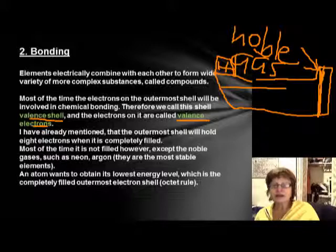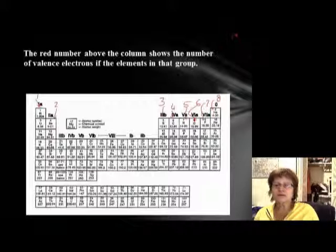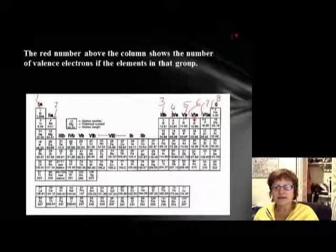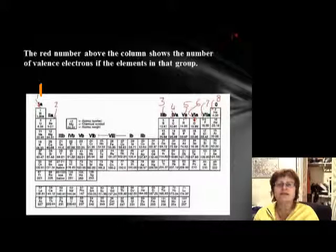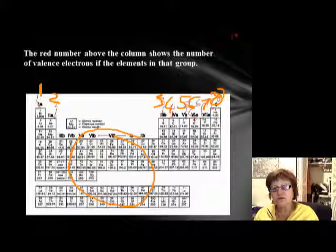Every other element besides the noble gases wants to react so they can have eight electrons and reach their lowest energy level — remember, the octet rule. Looking at the valence electrons by column: the first column has one electron on the outermost shell, the second column has two, the third has three, the fourth has four, and so on up to seven.